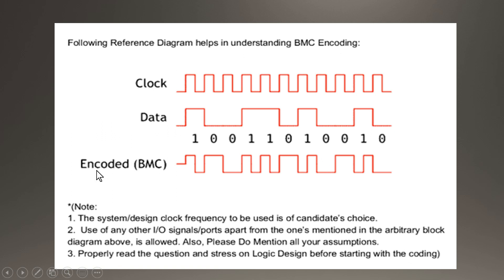This is the serial BMC encoded data stream, which is the input to the CDR module. Let us assume that this clock and data are the two signals at the transmitter side. This data is encoded as a serial encoded bit stream. Now let us see how this data is encoded as a serial BMC encoded bit stream.